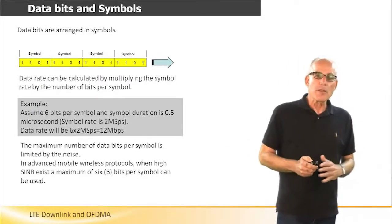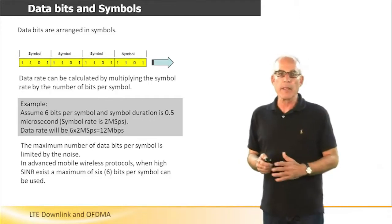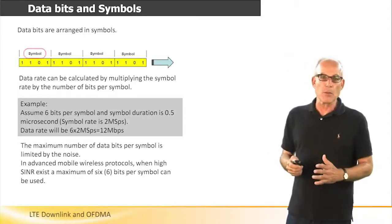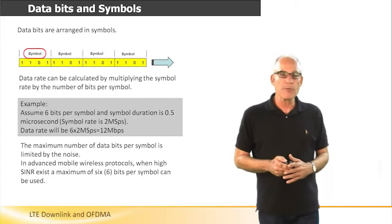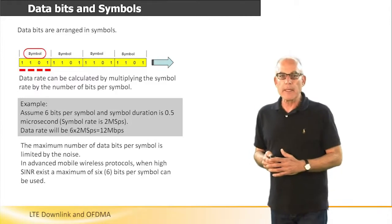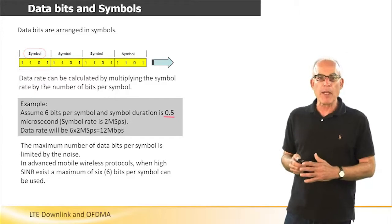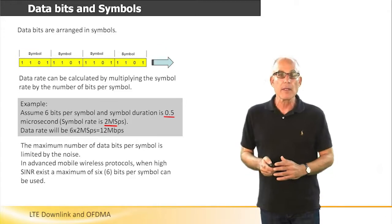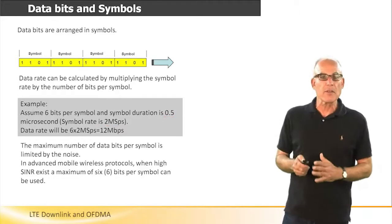In order to understand why subcarriers are required at all, let's look at the way that data bits are delivered. Data bits are arranged in symbols, and each symbol includes a certain number of bits. Let's take an example. Assume that we have symbols in which their duration is 0.5 microsecond. It means that the symbol rate is 2 mega samples per second. Let's assume that for each symbol, we use 6 bits.